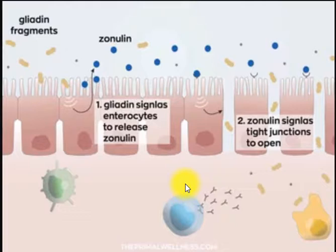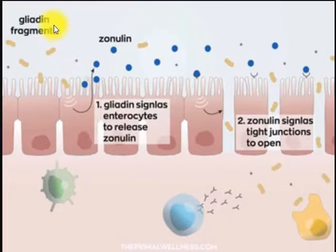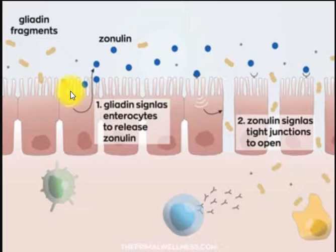Wheat gluten contains a very specific type of protein known as gliadin — alpha gliadin — and it doesn't break down all the way. You get these fragments. Believe it or not, in the small intestines there are receptors specific for alpha gliadin. When it comes through and attaches to the small intestinal walls, it causes the cell to release another protein called zonulin, which you can see right up here at the top.